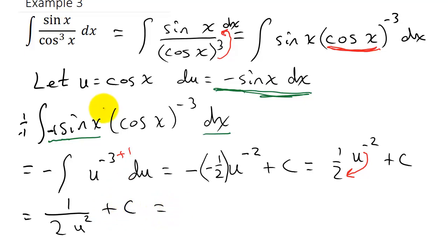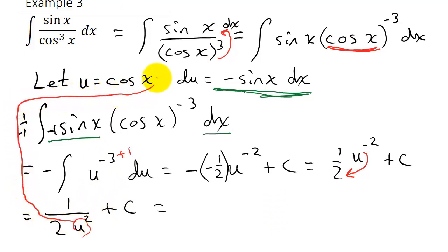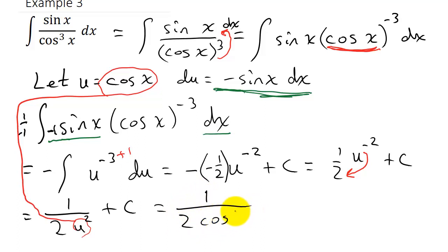Now I need to get my answer back in terms of x. U is cosine x, so I put cosine x in for u. This gives me 1 over 2 cosine squared x plus c. And this would be our solution.